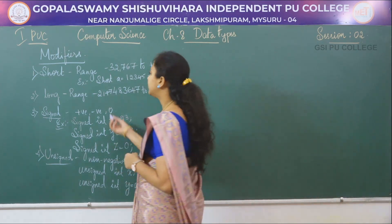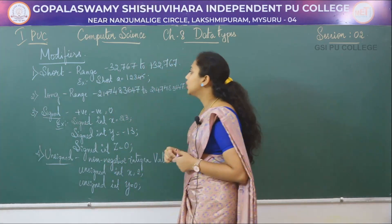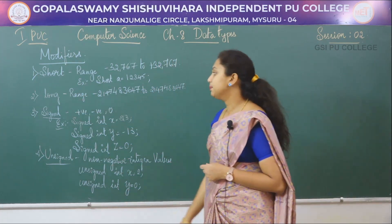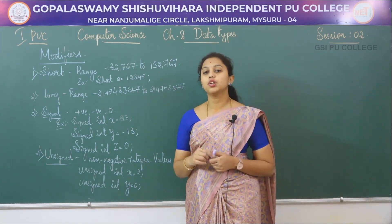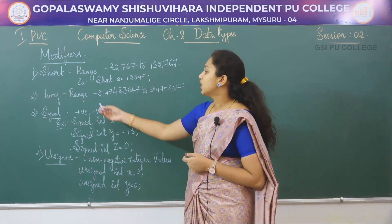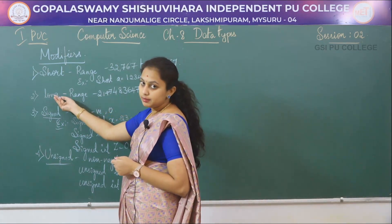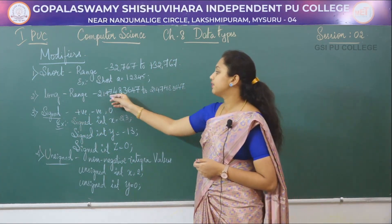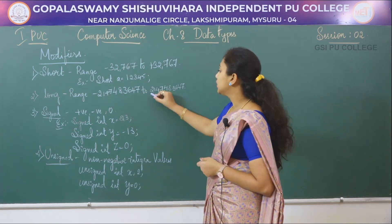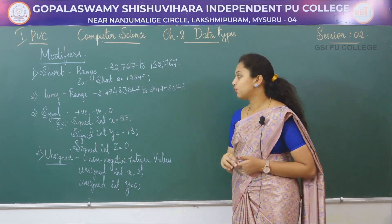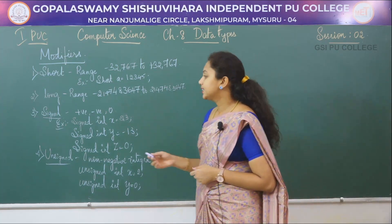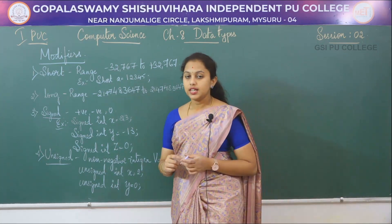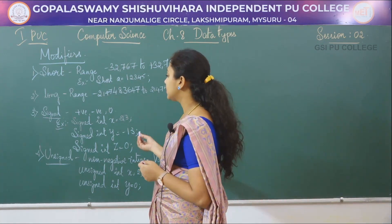An example for the short type is: short a = 12345. When it comes to the long type, if we need to store large integers we can use the long modifier. It ranges from -2147483647 to 2147483647.